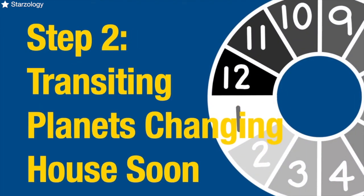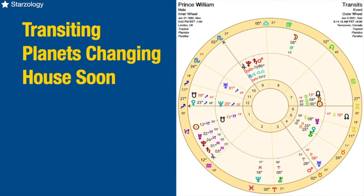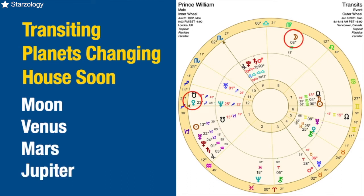Then you want to look at transiting planets that are changing house soon. Taking a closer look at this bi-wheel, we can see clearly the moon will change house within two or three days — not really important but worth mentioning. Venus will be changing house, Mars will, and so will Jupiter. Those four planets are highlighted with red circles and you can see they are moving towards the end of a house, towards the cusp of a new house. Venus will enter the first house perhaps in a week or two — it will cross his ascendant — and that's a transit to pay attention to. As Venus enters his first house, you would want to talk about what he's likely to attract into his life: love, finances, and how they are going to affect him personally.